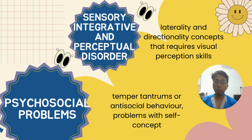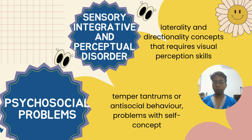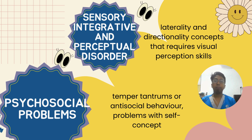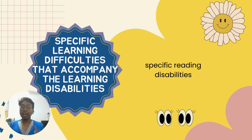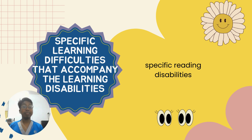The eighth type is psychosocial problems, which include temper tantrums and antisocial behavior — for example, not wanting to interact with children their own age and preferring solitary play. They also struggle with self-concept, meaning understanding themselves and how they function in the world. The ninth type is specific learning difficulties that accompany learning disabilities, such as specific reading disabilities.